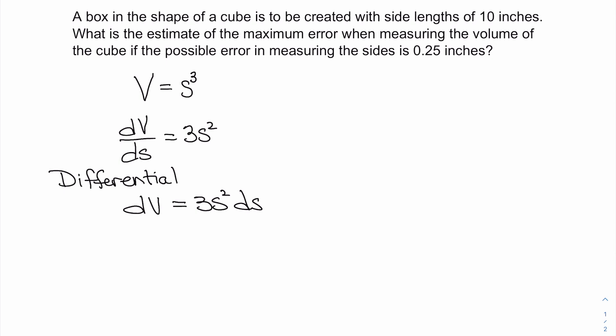We know we want to have the side length to be 10 inches, so s is 10 inches, and the possible error in measuring the sides is 0.25 inches. That's your ds.